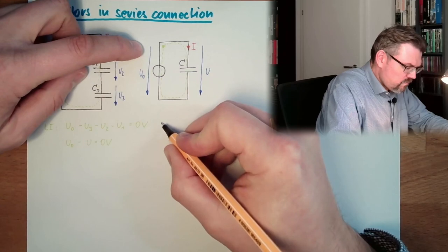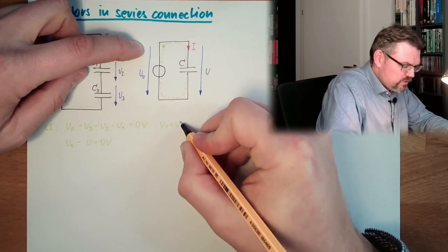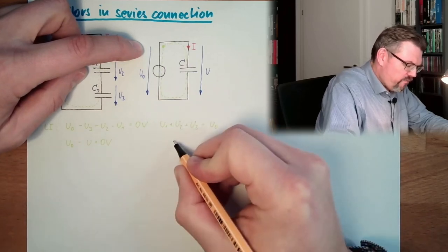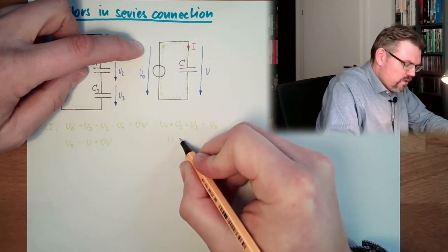So, here we have U1, plus U2, plus U3, equals U0, and here we have U1, plus U2, plus U3, equals U0.